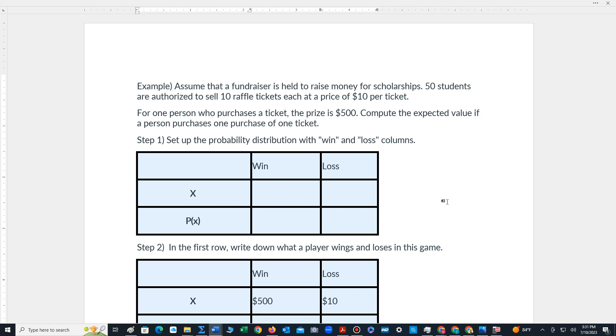50 students are authorized to sell 10 raffle tickets, each at the price of $10 per ticket. For one person who purchases a ticket, the prize is $500. Compute the expected value if a person purchases one ticket.